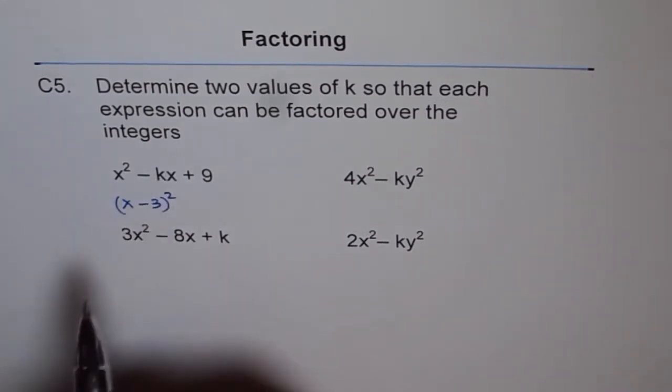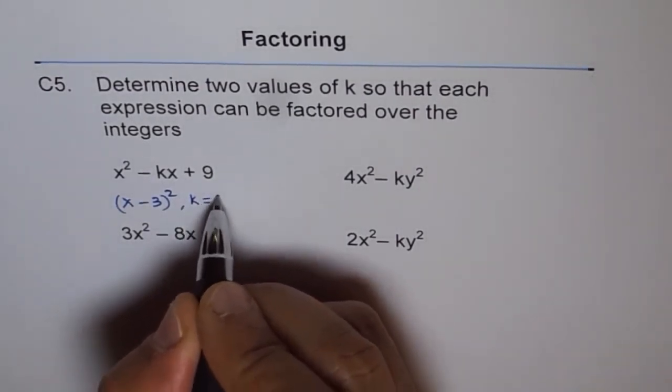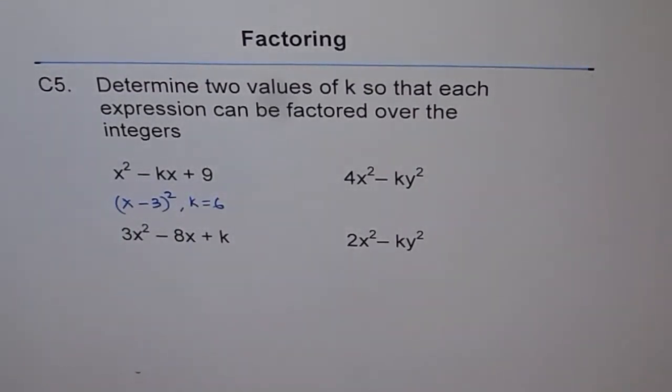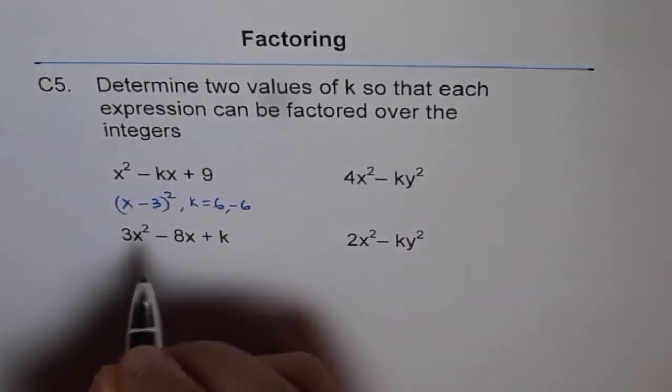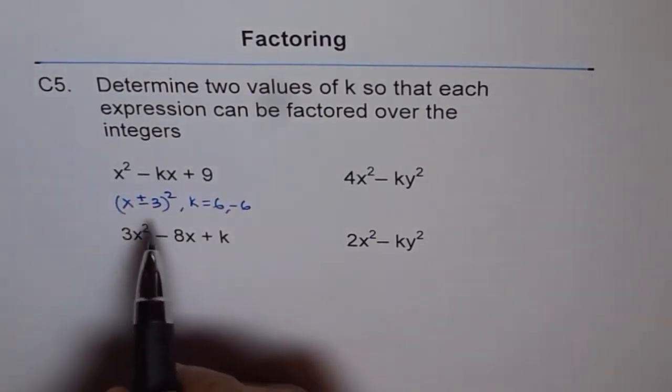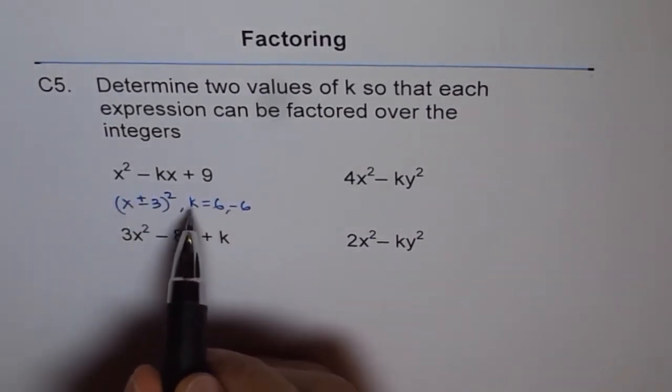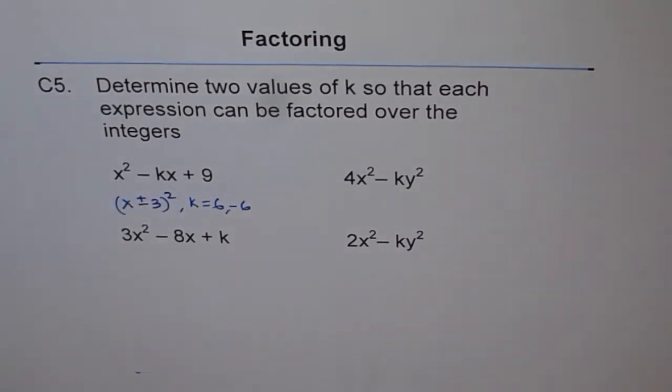So k could be 6, right? So I get a value of k as equal to 6 for this to be factored. The other value of k could be minus 6. Since I can write this as k of minus 6, it will become x plus 3 whole square, right? That number will be plus. So we have two options, correct? So those are the two values.